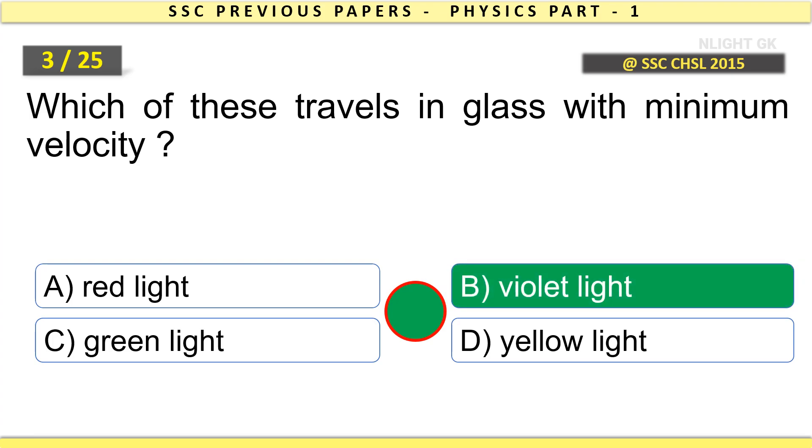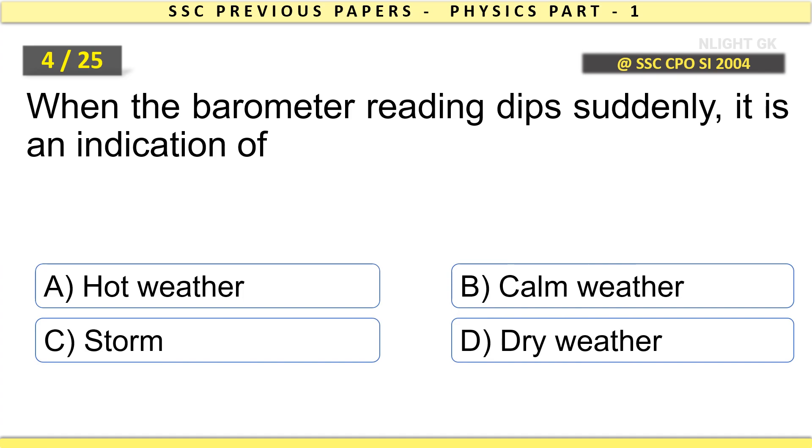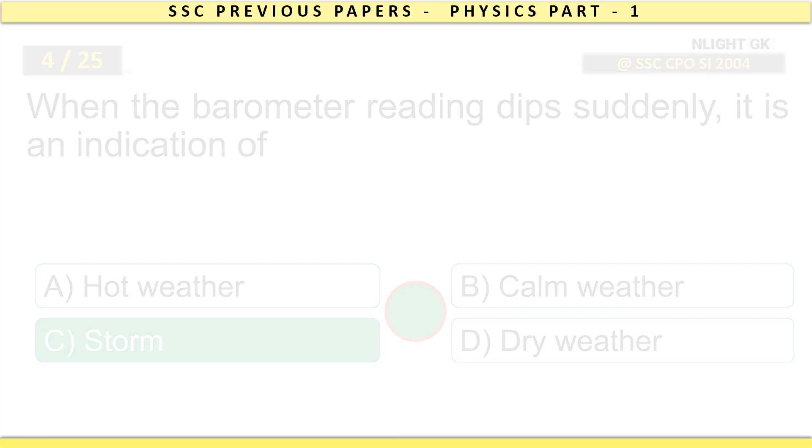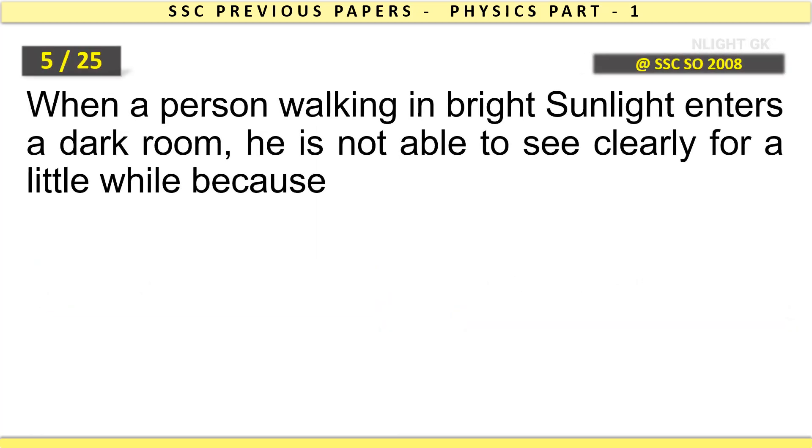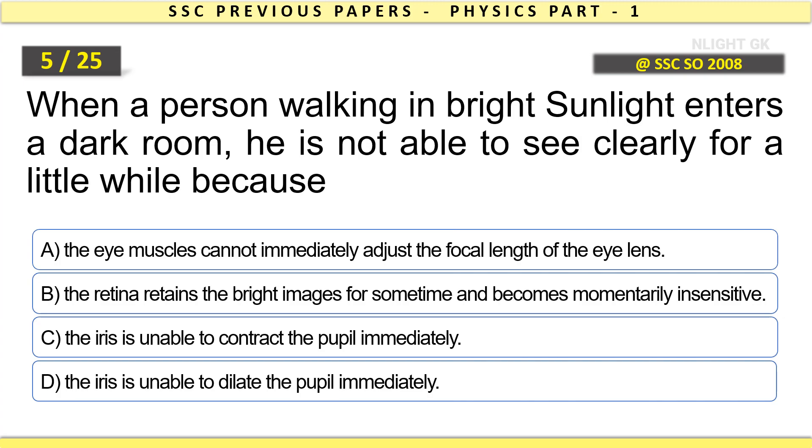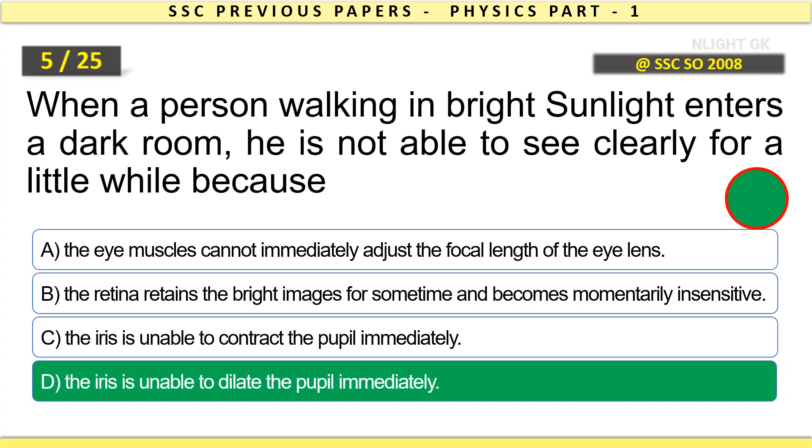When a person walking in bright sunlight enters a dark room, he is not able to see clearly for a little while because the iris is unable to dilate the pupil immediately.